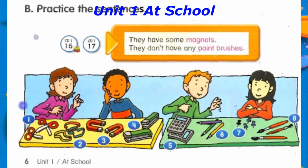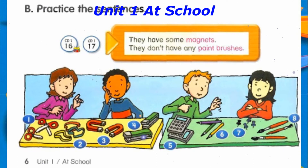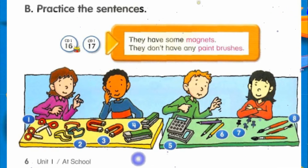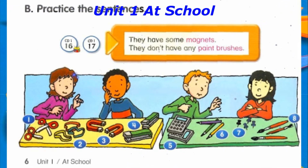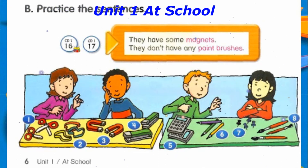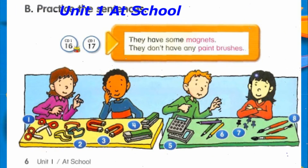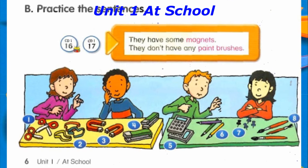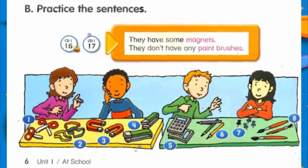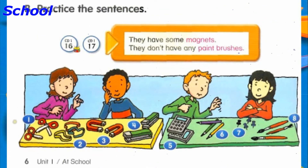Track 17. B. Practice the sentences. Number 1: They have some scissors. Number 2: They don't have any paintbrushes. Number 3: They have some magnets. Number 4: They don't have any colored pencils. Number 5: They have some calculators. Number 6: They don't have any rubber bands. Number 7: They have some pushpins. Number 8: They don't have any staplers.